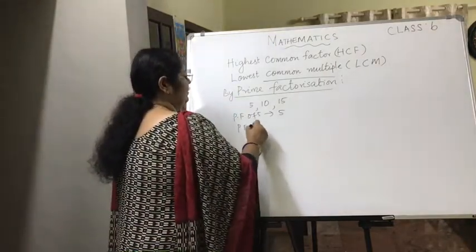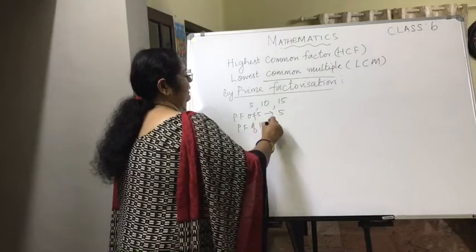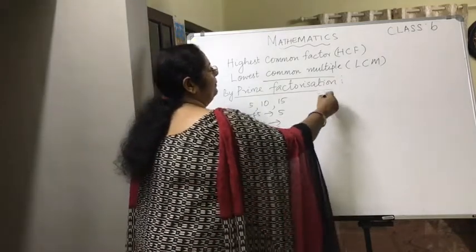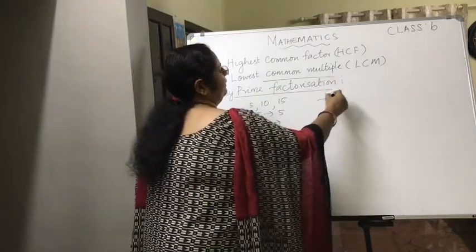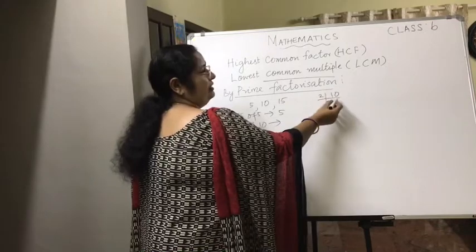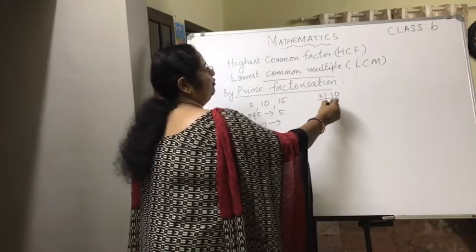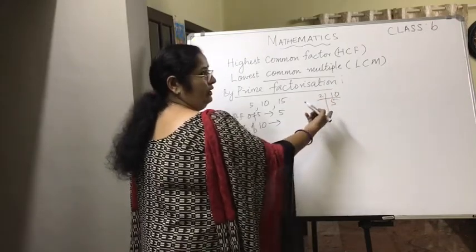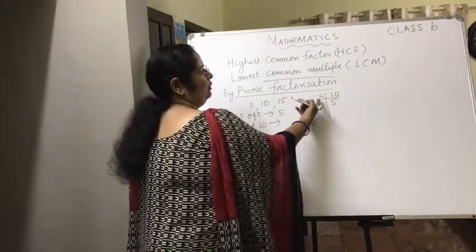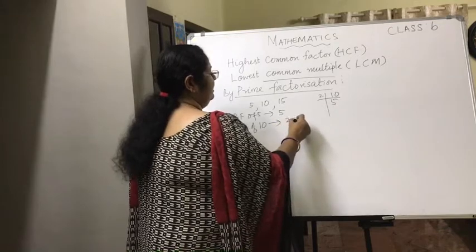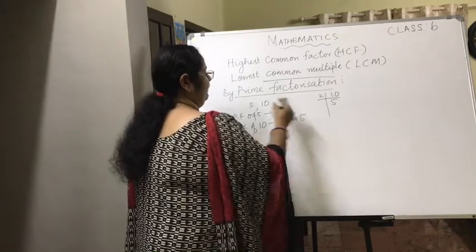Next is the prime factorization of 10. We start with the least prime number, 2. Since 10 is divisible by 2 — 2 fives are 10 — and we cannot go further, the prime factorization of 10 is 2 × 5.